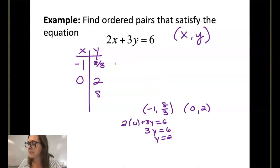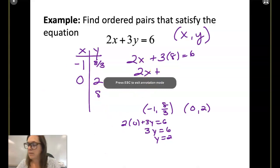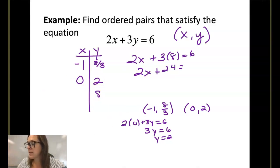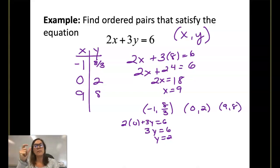What if my y was 8? What would x be? We would do 2x plus 3 times 8 equals 6. 2x plus 24 is equal to 6. Subtracting 24 gets us negative 18. Dividing gets us negative 9. So negative 9, 8 would be an ordered pair. We should be able to work on either side of the table and plug in either x or y and solve for the other variable.